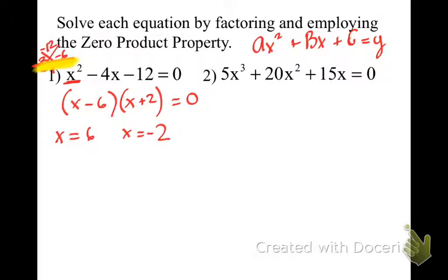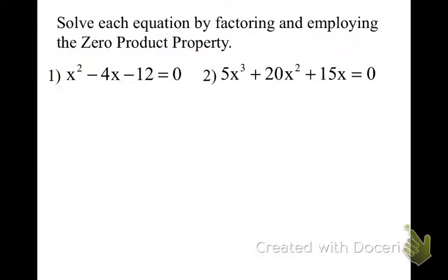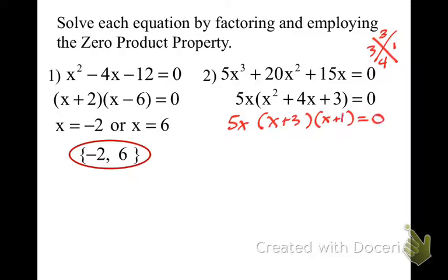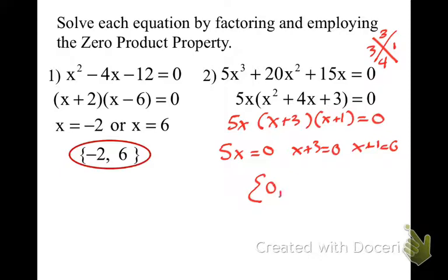Number 2 — the first thing we do is find the GCF. Harrison says we GCF first, and my GCF is 5x. Then we do our x-marks-the-spot: what multiplies to 3 and adds to 4? That's 1 and 3. So I've got 5x times x plus 3 times x plus 1, all equals 0. Miles works through it: 5x equals 0, x plus 3 equals 0, x plus 1 equals 0, giving solutions x equals 0, negative 3, and negative 1.